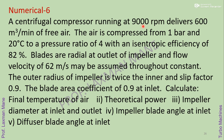Next numerical: a centrifugal compressor running at 9000 RPM delivers 600 cubic meters per minute of free air. Air is compressed from 1 bar and 20 degrees Celsius to a pressure ratio of 4 with an isentropic efficiency of 82%. Blades are radial at outlet of impeller and flow velocity of 62 m/s is assumed constant throughout. Outer radius of impeller is twice the inner radius and slip factor is 0.9. Blade area coefficient K is 0.9 at inlet. Calculate final temperature, theoretical power, impeller diameters at inlet and outlet, impeller blade angle at inlet, and diffuser blade angle at inlet.